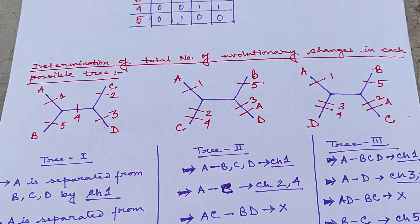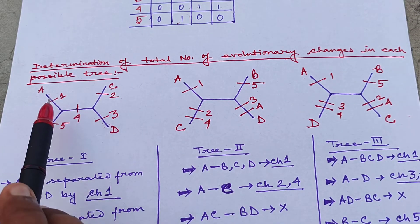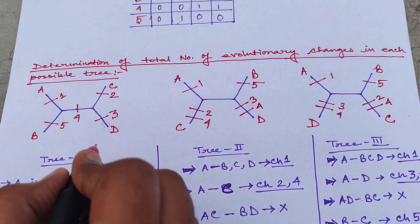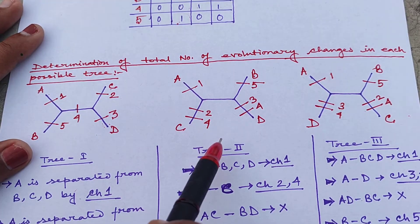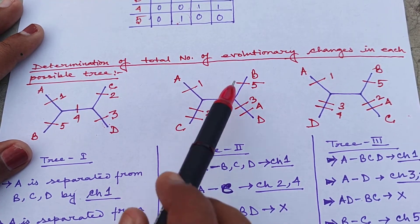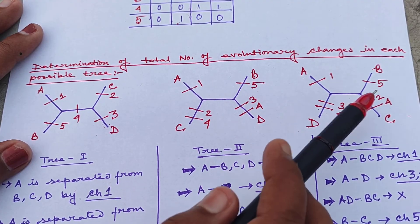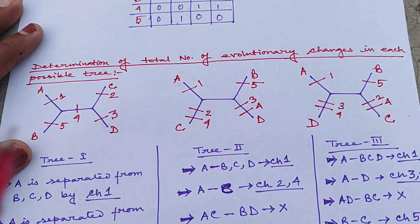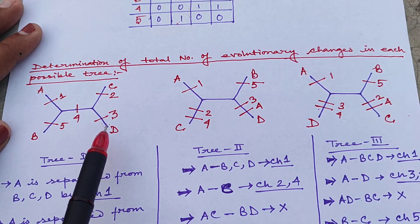Now our next work is to find the total number of changes in these 3 trees. In tree 1, there are 1, 2, 3, 4, 5 — total 5 evolutionary changes or mutations. In case of tree 2, there are 6 changes. And in case of tree 3, there are also 6 mutations. So among these 3 trees, tree 1 is showing the least number of mutations. So tree 1 is our most parsimonious tree.